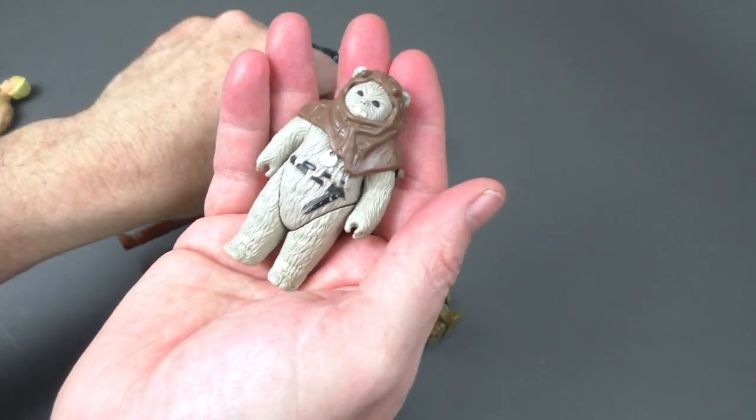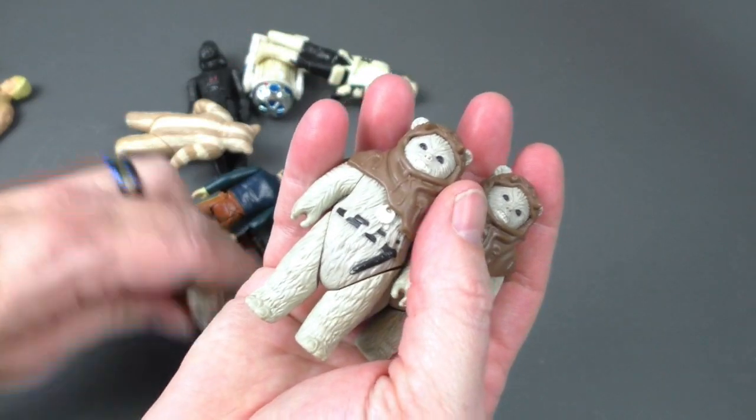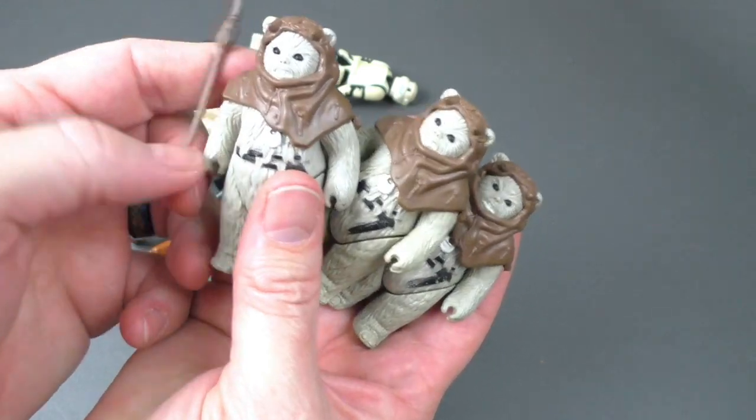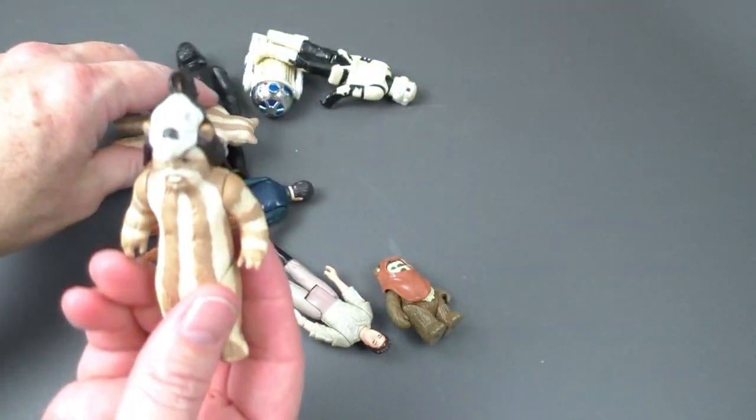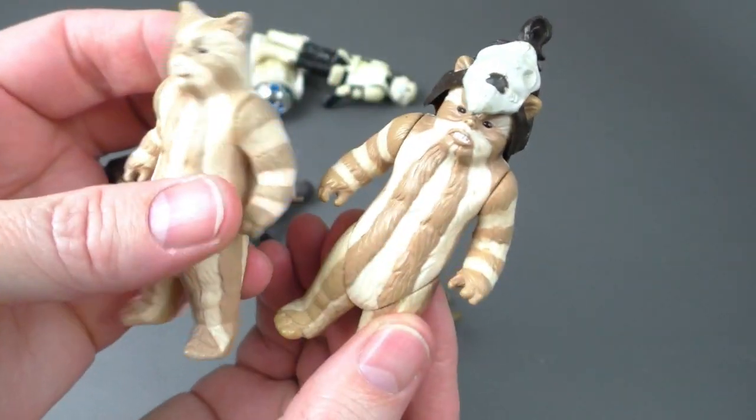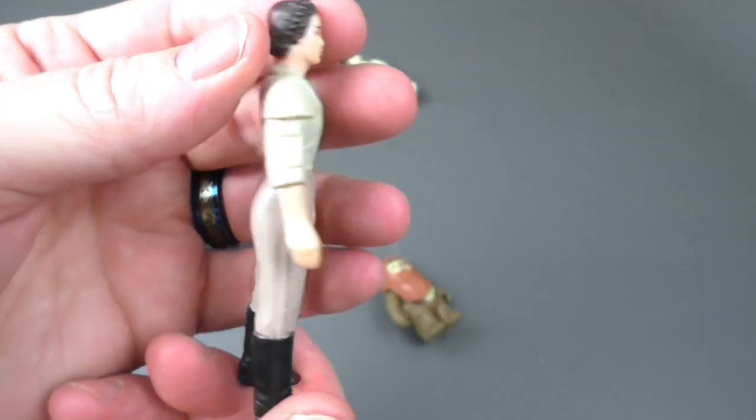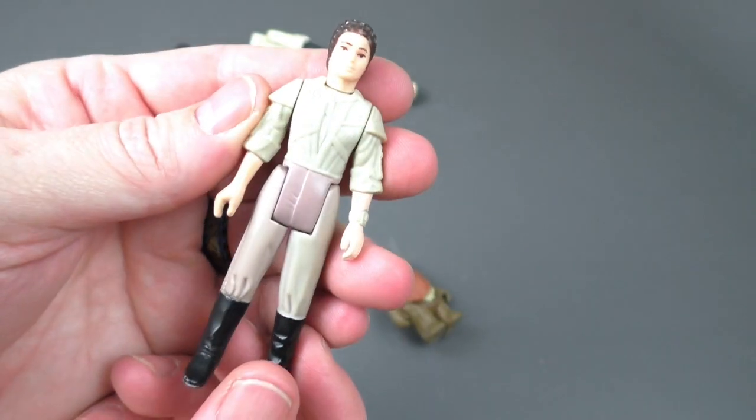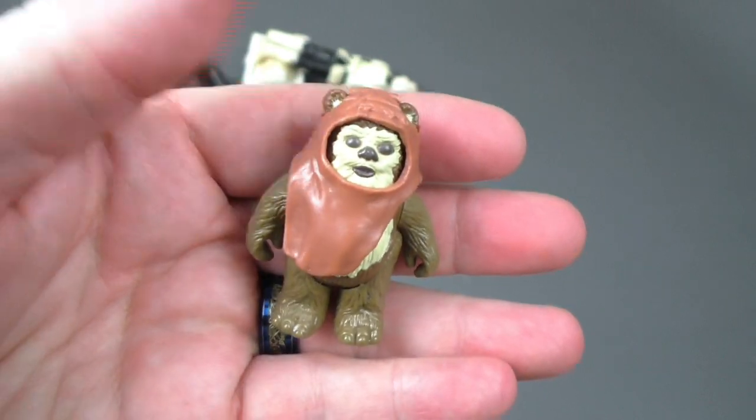And I got all these Chief Chirpas. One weapon. They look good. No problems with these. Two Lograys. They look good too. Got Princess Leia in her general outfit. And look I have Wicket. So cute.